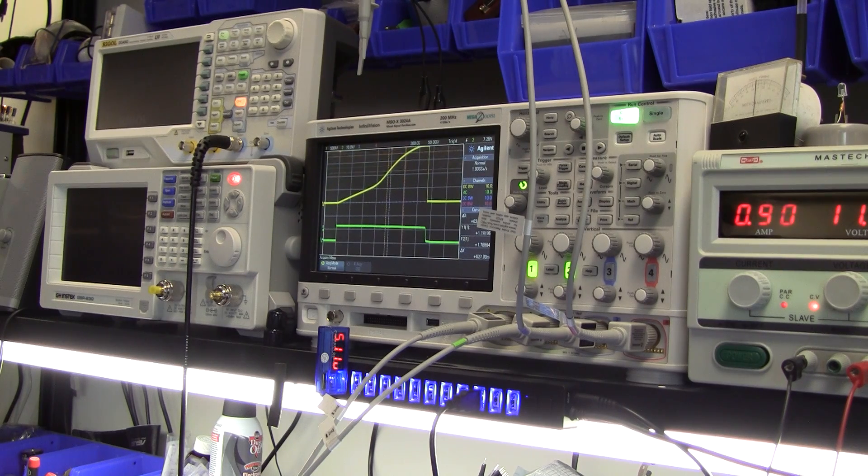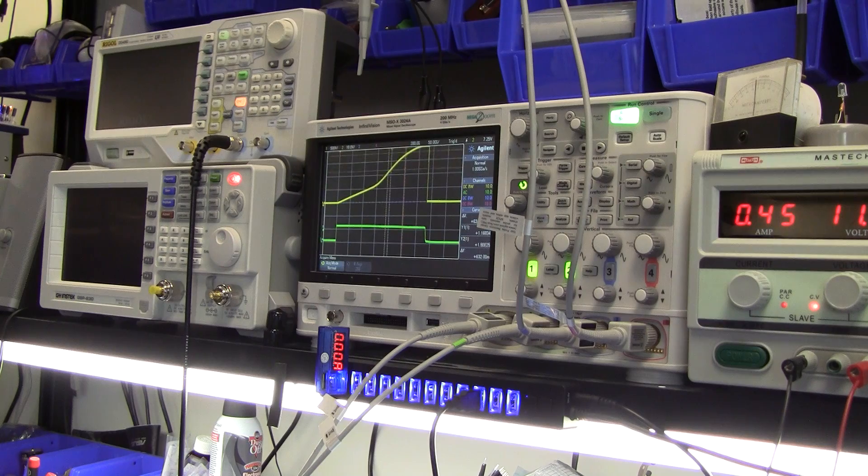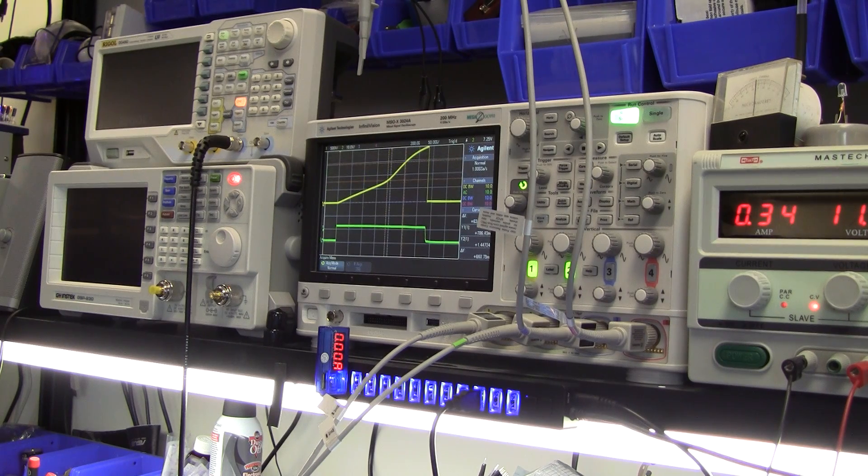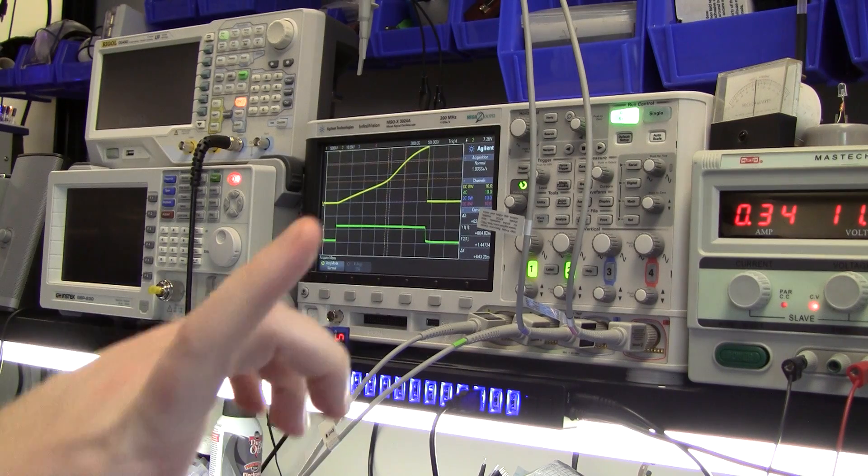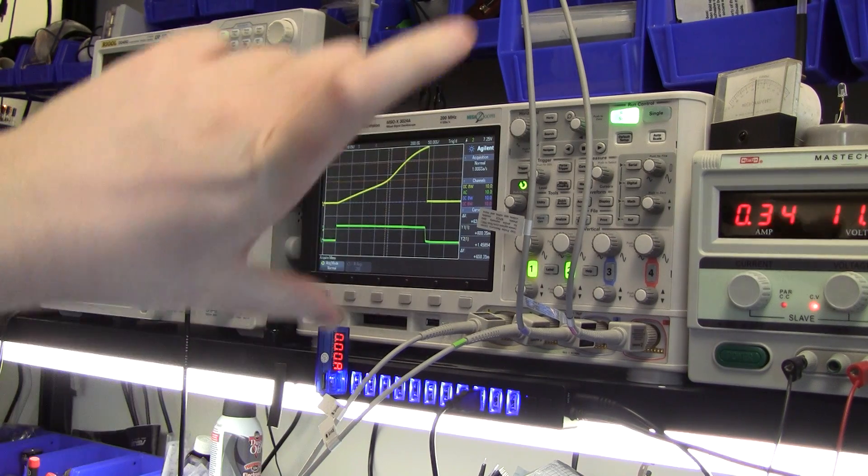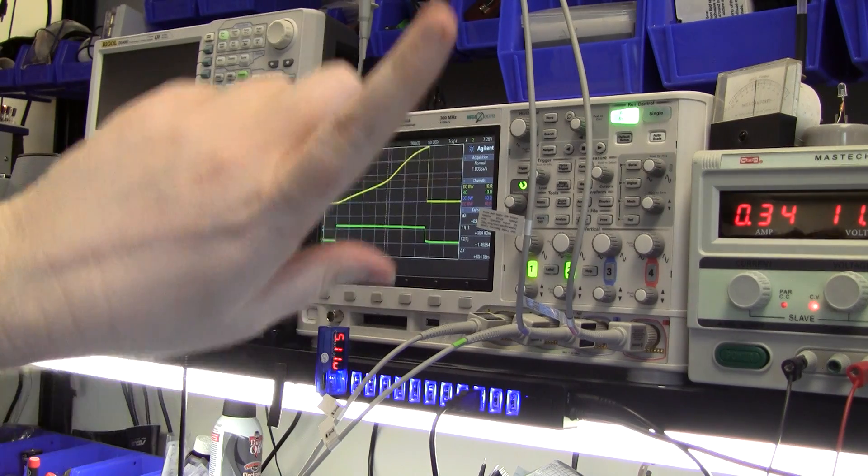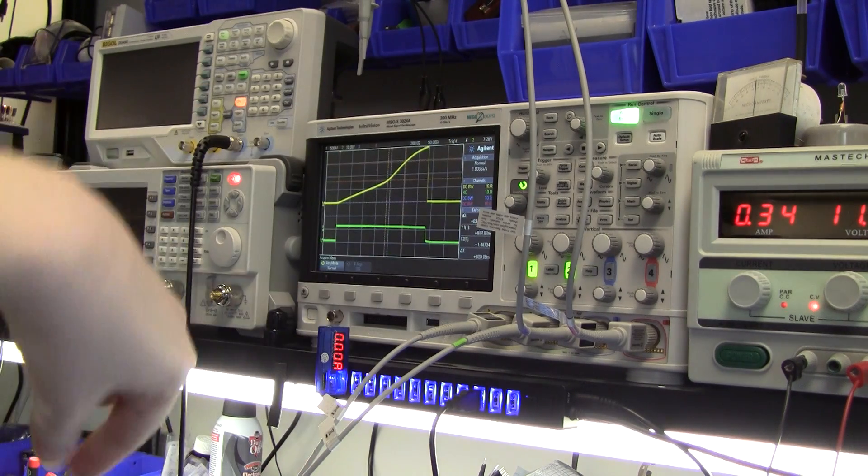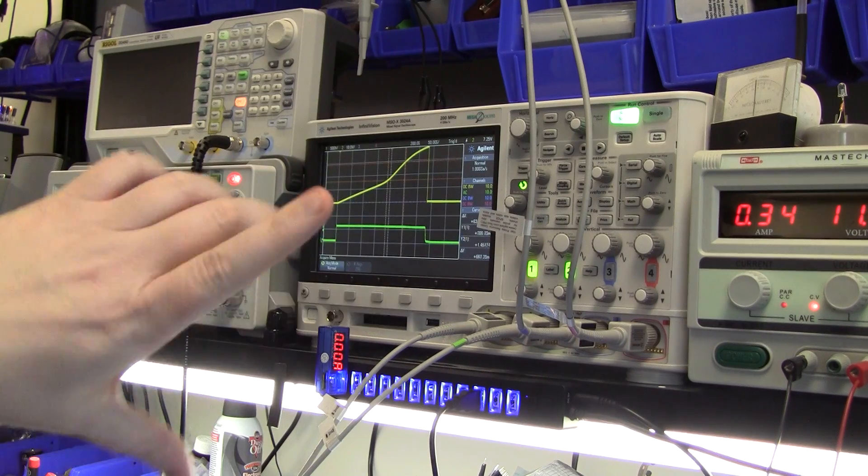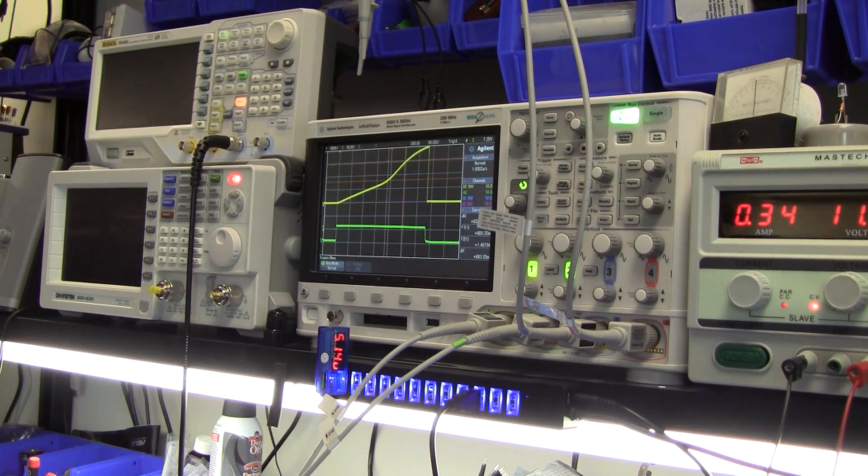So what I'm essentially doing is if you imagine the hysteresis curve I'm moving the center point up and down so it has more direction to go in one way or the other through the origin in the magnetization curve.